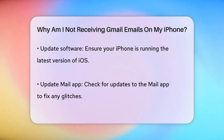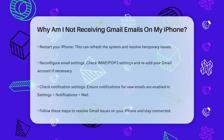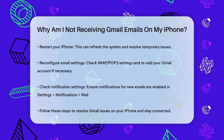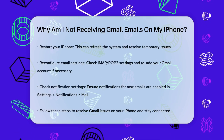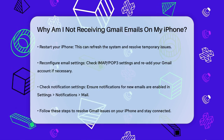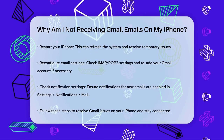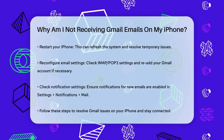Incorrect email settings can also prevent you from receiving emails. If the email account server settings — IMAP or POP3 — are incorrect or have changed, you might need to reconfigure your account. You can do this by removing and re-adding your Gmail account in the Settings app.